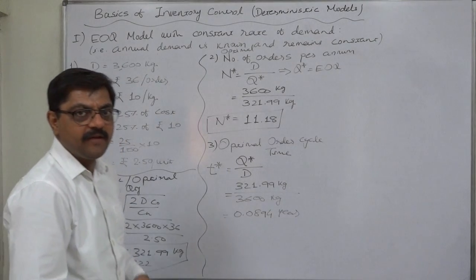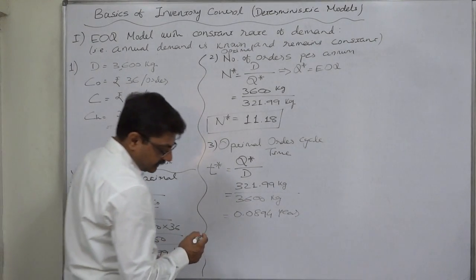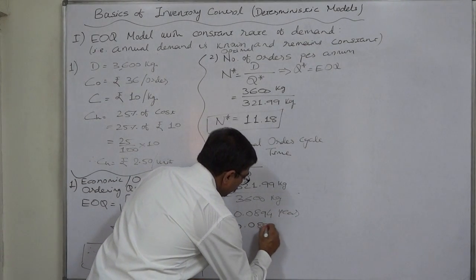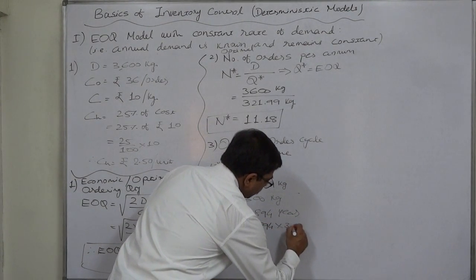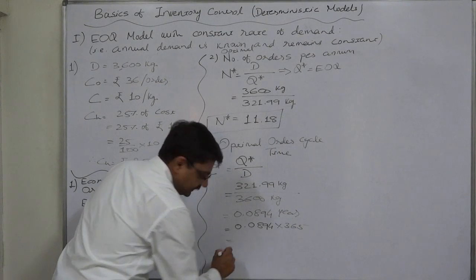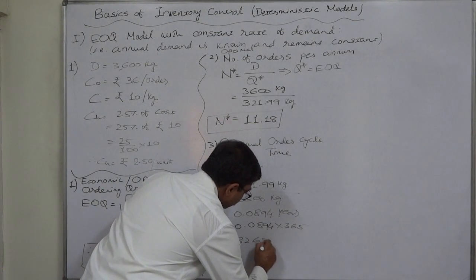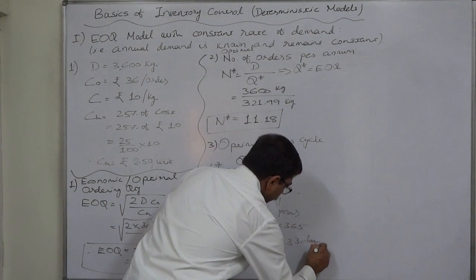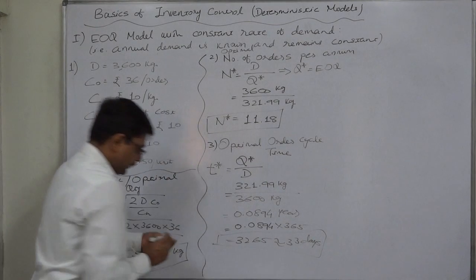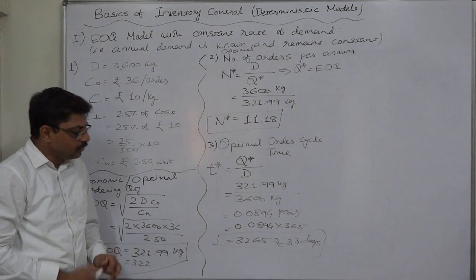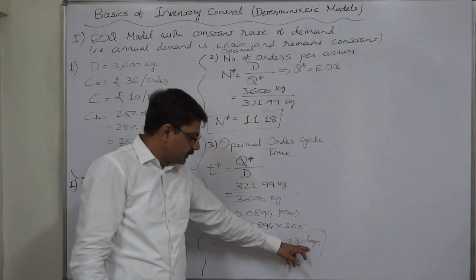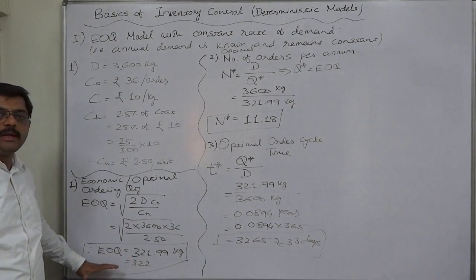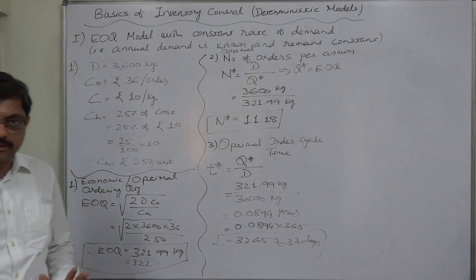We have to make it a meaningful statistic. Let us calculate this in number of days. So, 0.0894 into 365. That is approximately 32.65 or say 33 days.